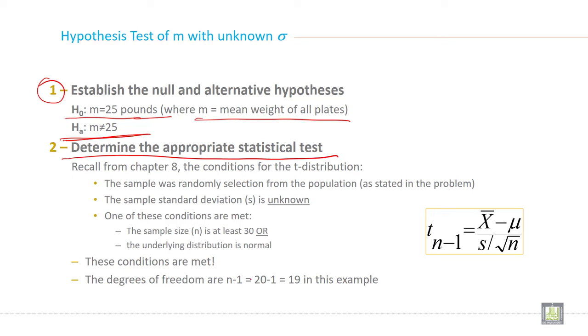The degrees of freedom are n minus 1, 20 minus 1 in this example, because sample size is only 20. So you can apply t-test.